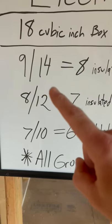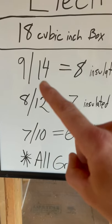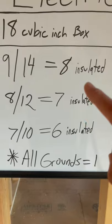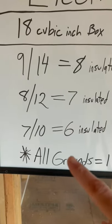So the 9/14 means you can have nine wires that are 14 gauge, and you can take one out for the ground, so you can have eight insulated conductors because all the grounds equal just one.